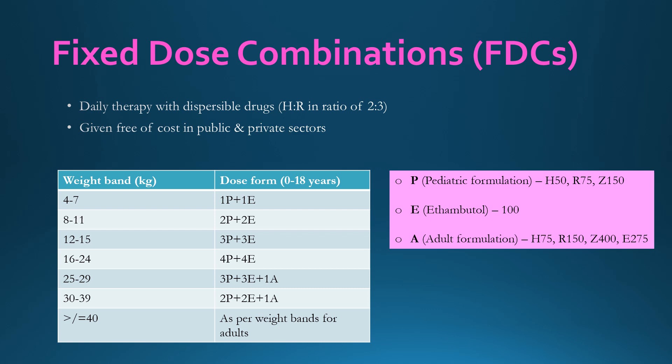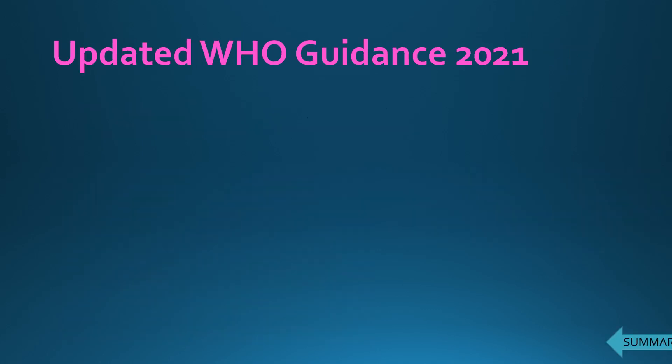The pediatric fixed dose combination contains three drugs: isoniazid 50 mg, rifampicin 75 mg, and pyrazinamide 150 mg, with ethambutol 100 mg supplemented separately. The adult formulation contains four drugs: isoniazid 75 mg, rifampicin 150 mg, pyrazinamide 400 mg, and ethambutol 275 mg.